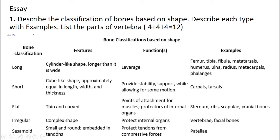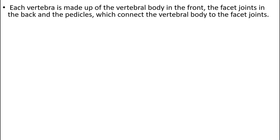Irregular bones are complex in shape. Sesamoid bones are small and round, embedded in the tendons. These are the bone classifications, and the features, functions, and examples are as described.